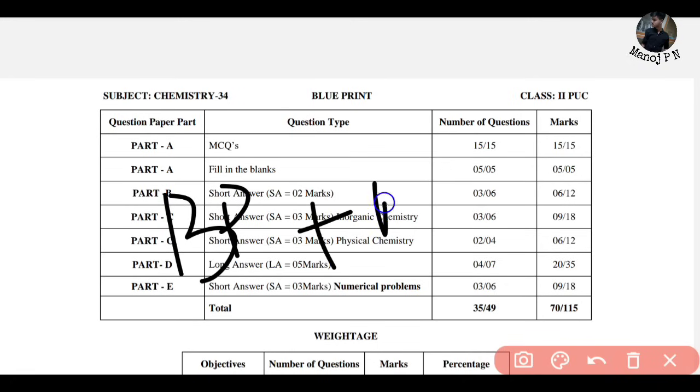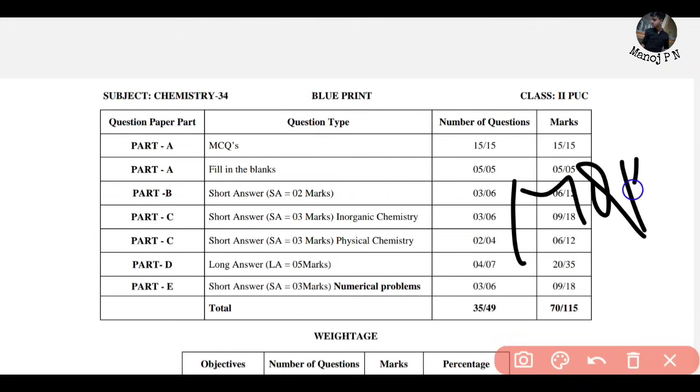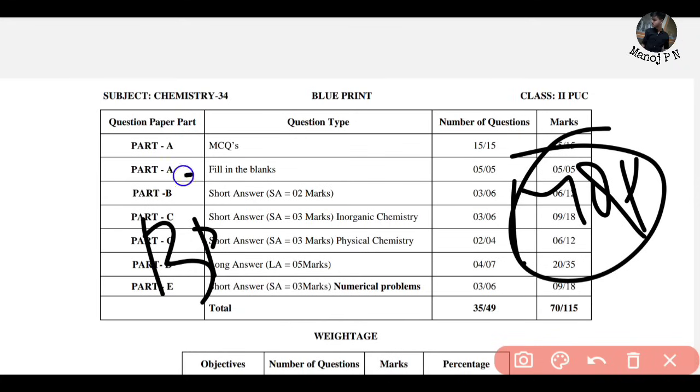Every year you have to observe it through this blueprint. You can observe it through the model question paper. You have an indication, a clear indication. That is the reason the model question paper is separate. So do not think about anything, just follow this thing.